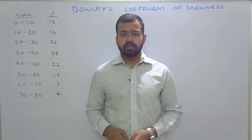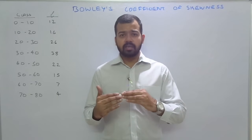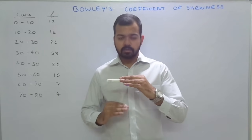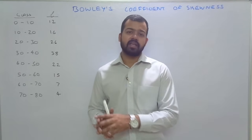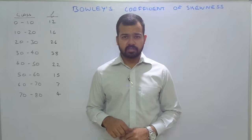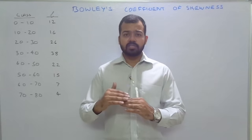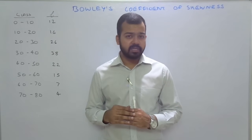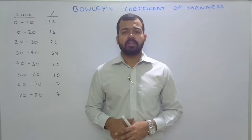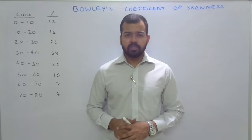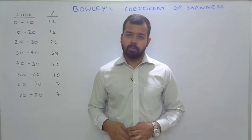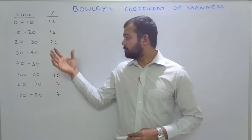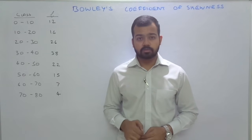In a skewed series, the value of Q3 is farther above the value of median, and Q1 is below the value of median. If the distribution is positively skewed, it means the value of Q3 is farther from the value of median, and Q1 is also not equidistant from the median. So this is a brief background of Bowler's coefficient of skewness. Here we will solve one practical question on how to calculate it.